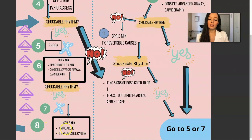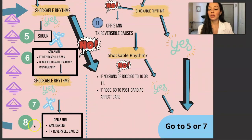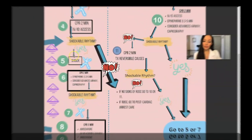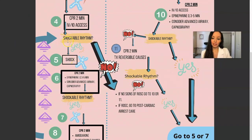You do CPR for two minutes, consider amiodarone and treat reversible causes — I will go over that in the next slide. If you're at step eight, follow the arrow and keep going. From eight, check if the rhythm is shockable and then proceed back to step five and keep cycling.